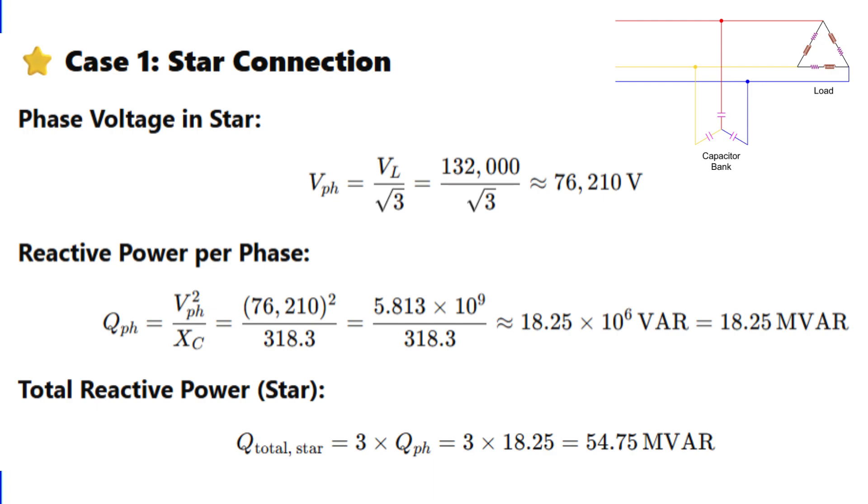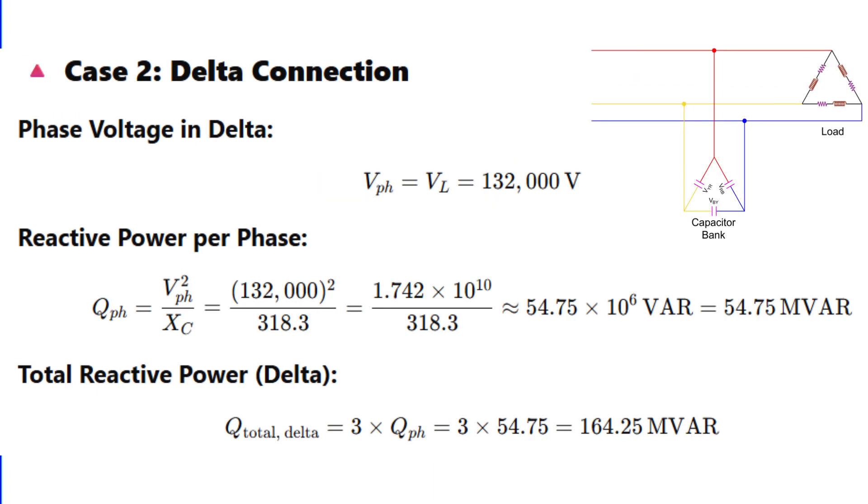Now in delta, each capacitor is connected across two lines, so it gets full line voltage. So V phase is equal to 132,000 volts. Reactive power per phase becomes 132,000 squared divided by 318.3, which gives approximately 54.75 megavolt-ampere reactive per phase. Multiply by three for total and we get 164.25 megavolt-ampere reactive in delta connection. So delta gives three times the reactive power compared to star connection using the same capacitors and same line voltage. That's a massive difference.